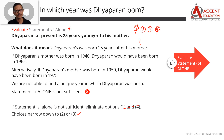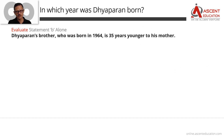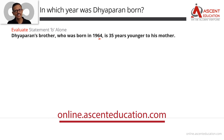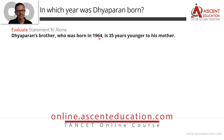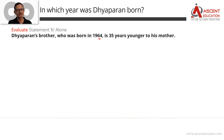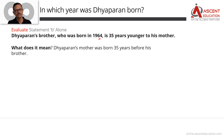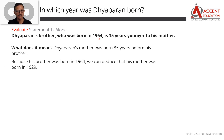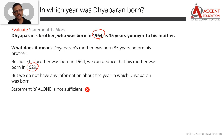Statement B says: Dayavaran's elder brother, who was born in 1964, is 35 years younger than his mother. This means their mother was born 35 years before 1964, which is 1929. So statement B tells us that the mother was born in 1929. However, statement B alone does not tell us directly when Dayavaran was born, so using statement B alone we have not been able to find the year in which Dayavaran was born. Statement B alone is not sufficient.